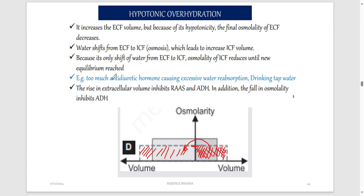An example of hypotonic overhydration is having too much antidiuretic hormone — too much ADH. ADH causes water reabsorption in the body, so instead of making a lot of urine you get water back into blood. That excess water increases blood volume, causing this condition. This setup also inhibits RAS and ADH because you already have enough water in the blood and don't want to absorb more.